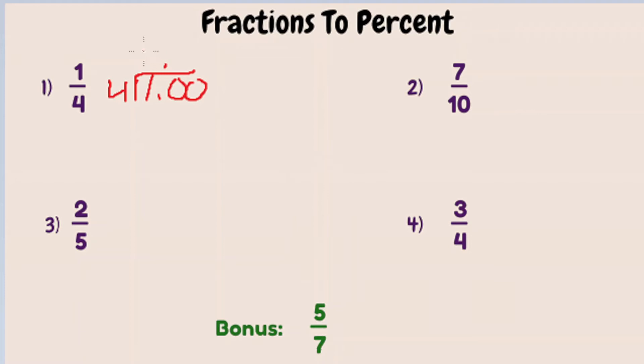Four does not go into one. Four goes into ten two times. Two times four is eight, with a remainder of two. Bring down our zero and twenty. Four goes into twenty five times.